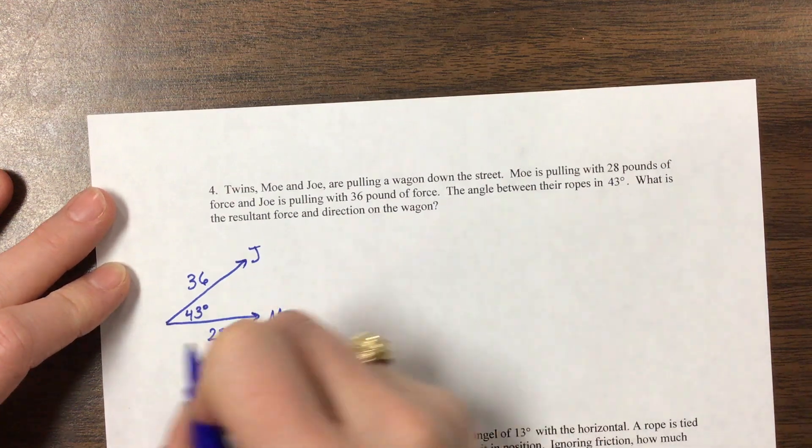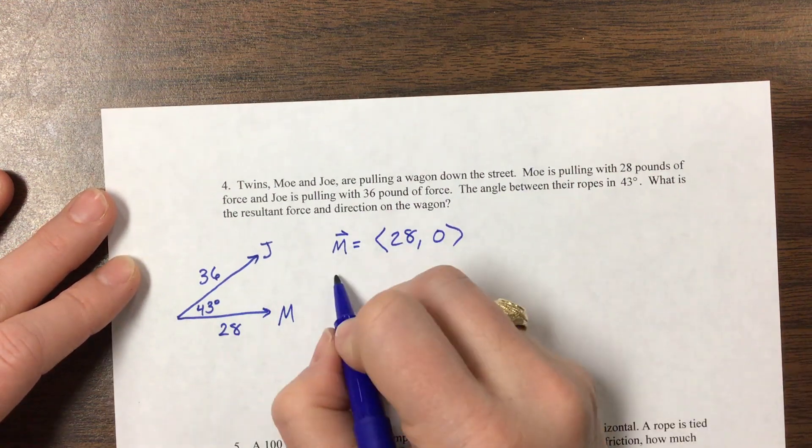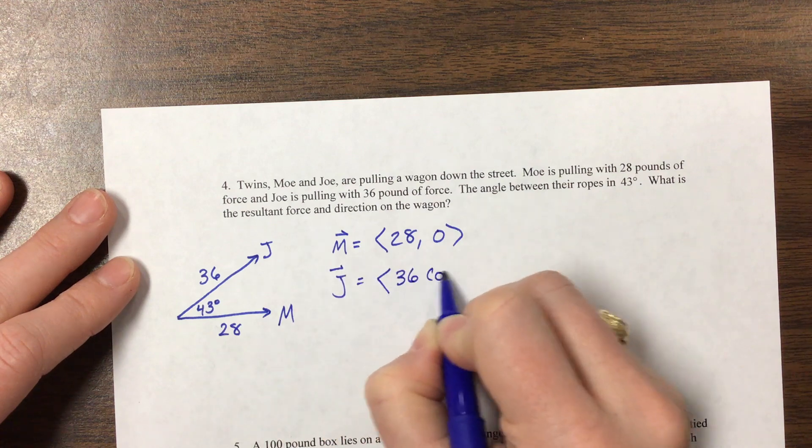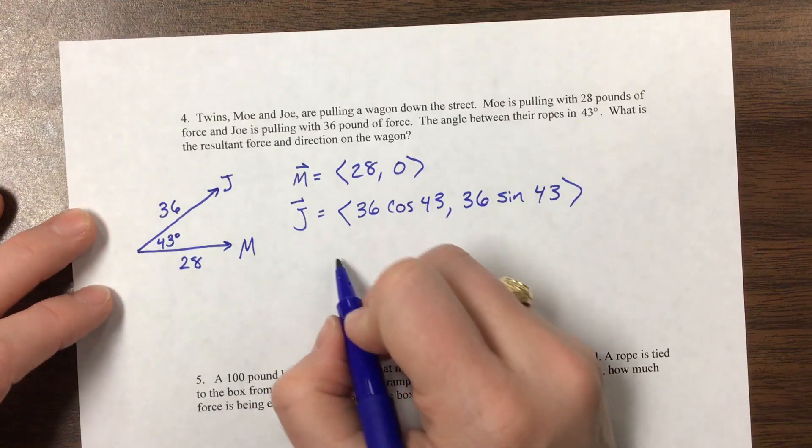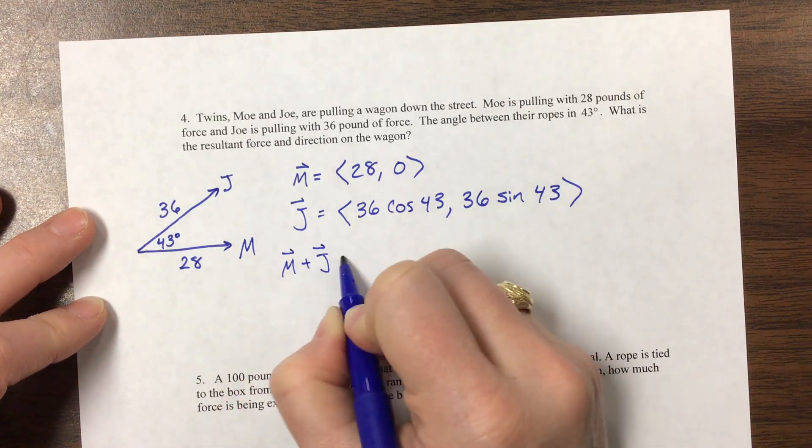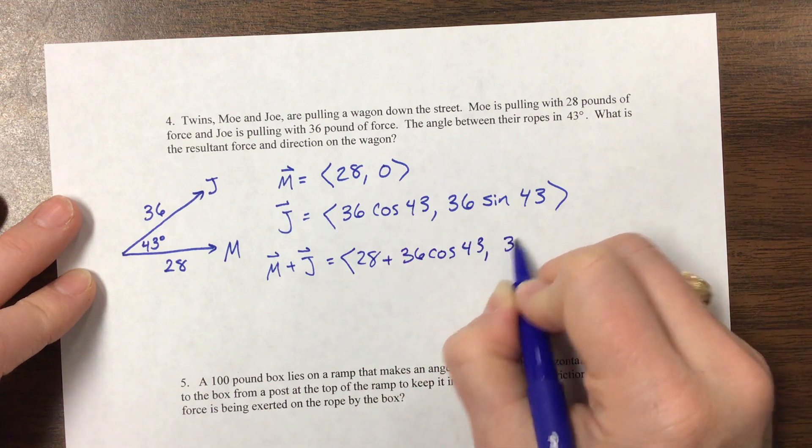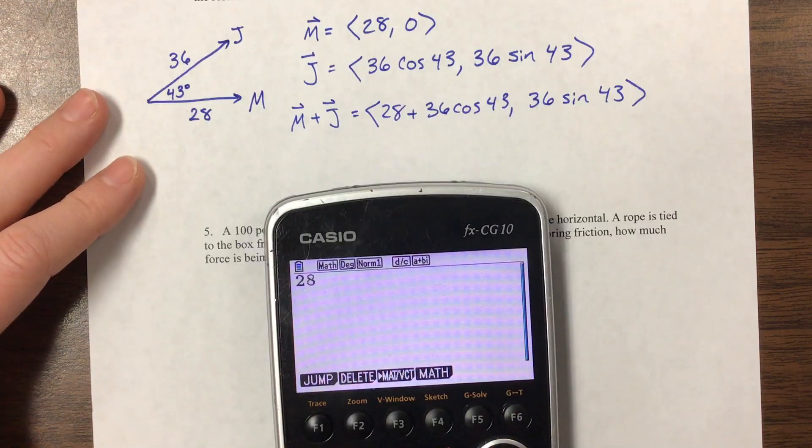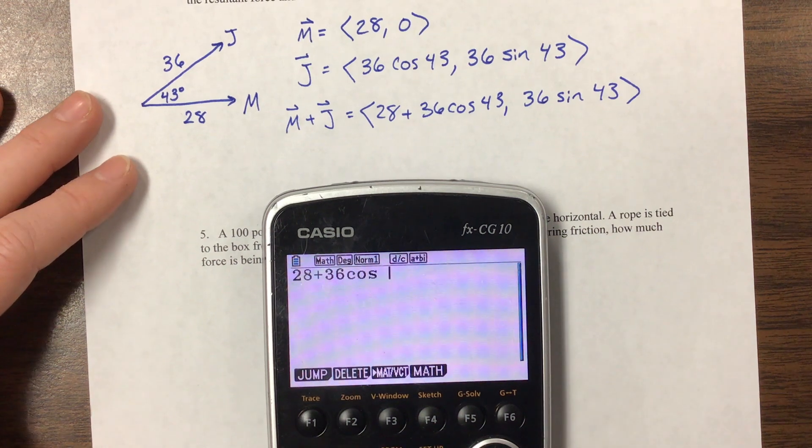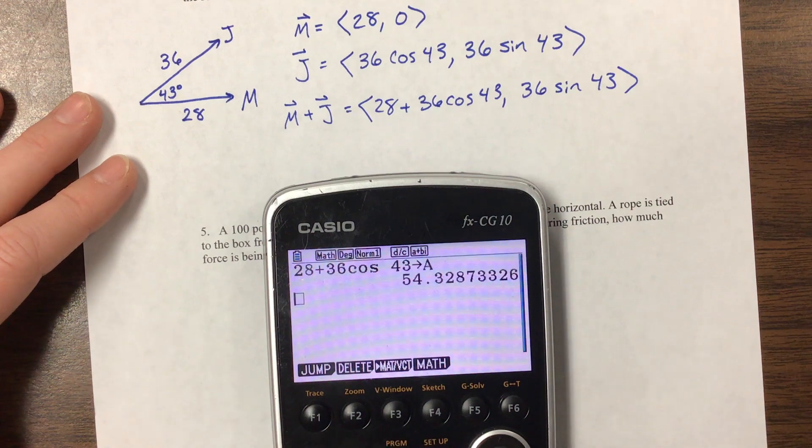So then we've got this one, it's just the vector. Moe's vector is just going 28 units in the x direction and 0 units in the y. And Joe, it's 36 cosine of 43, and it's 36 sine of 43. And so we're adding those together. I'm trying to show you the work that I'd be looking to see. And then I'm going to store those in my calculator like I have been. So that's my A value, and then my B value is just 36 sine of 43.